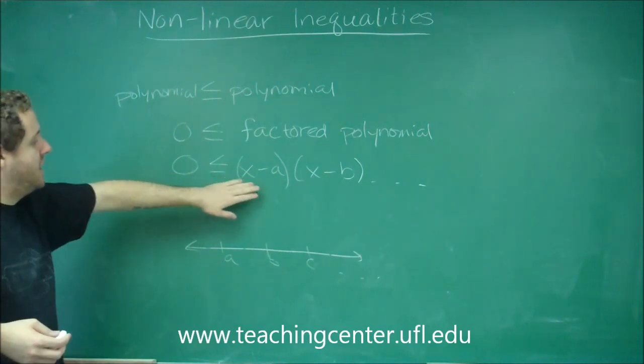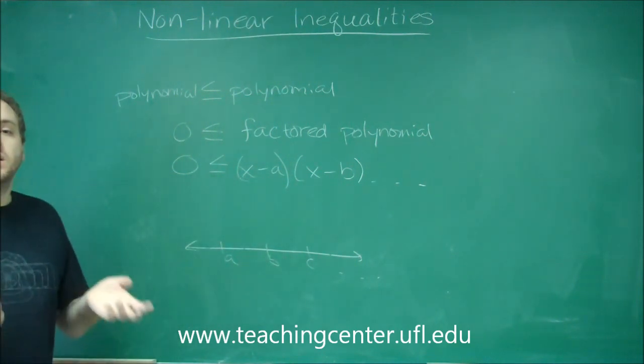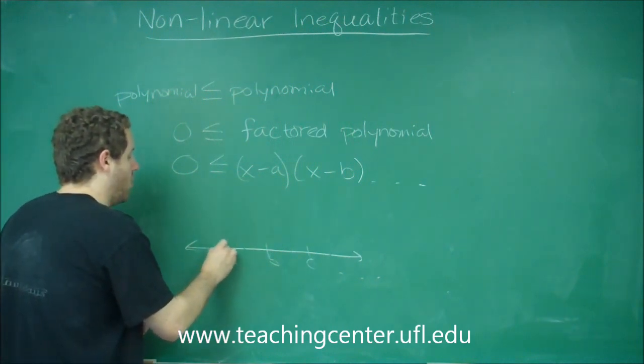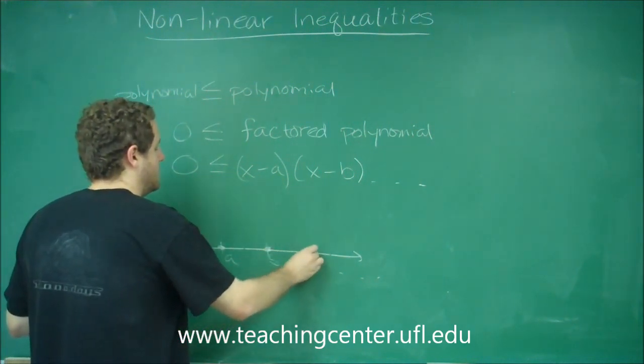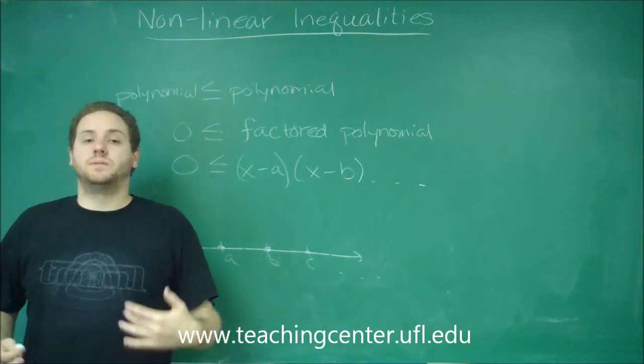So anything that sets up equality, meaning in this case, anything that lets you equal zero, is in there. So all of these would be closed circles because they would work. If this was strictly greater than, then all of these would have to be open circles, for example.